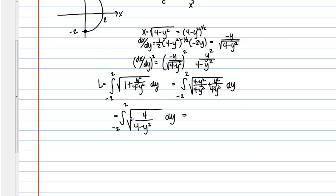So then it looks like under the square root there I get 4 over 4 minus Y squared, DY. So I can take the square root of the numerator, the square root of 4 is just 2. So then this becomes 2 over the square root of 4 minus Y squared, DY.